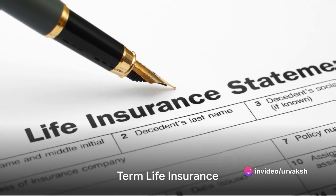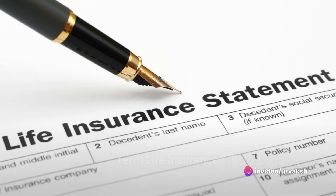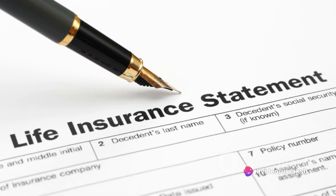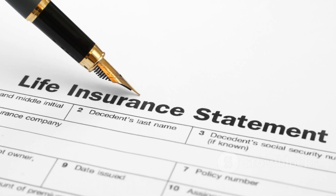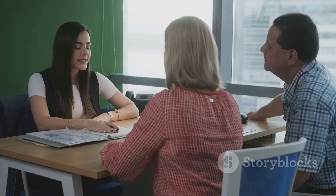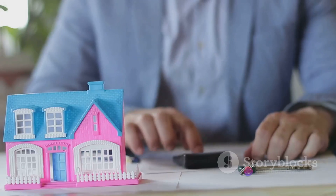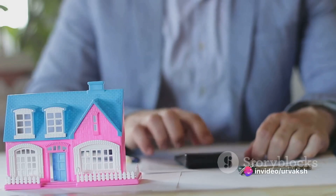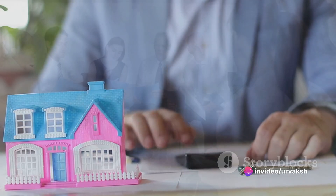There's also term life insurance, which provides coverage for a specified term of years. If the insured dies during the term, the death benefit will be paid to the beneficiary. Term life insurance is typically less expensive compared to permanent life insurance.